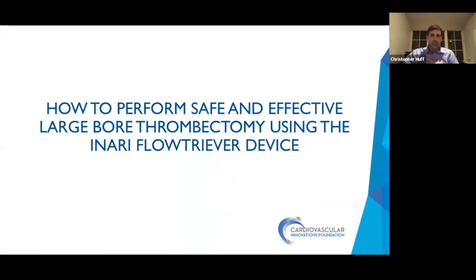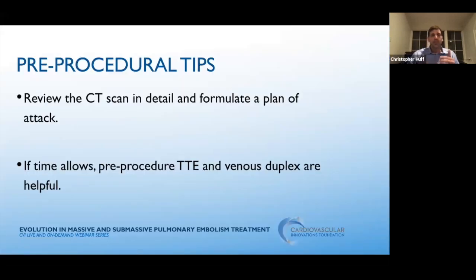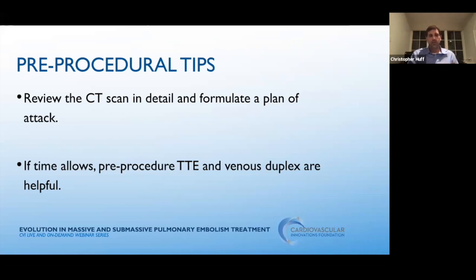These are the steps I use for safe and effective thrombectomy. It all starts with pre-procedural planning. I review CT scans in detail and formulate my plan of attack before going in — I know where I'm going to park my wire, where to park my catheter, and how many pulls it's likely going to take on each side. If time allows, I love to see an echo pre-procedurally, not just to look at the RV, but also to look for clot in transit.